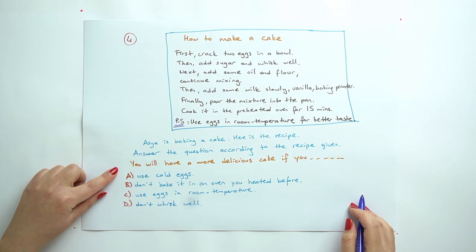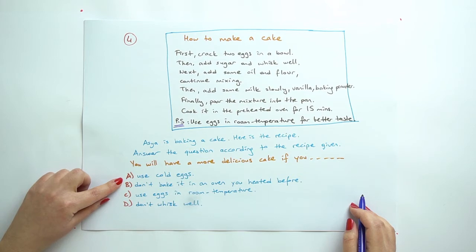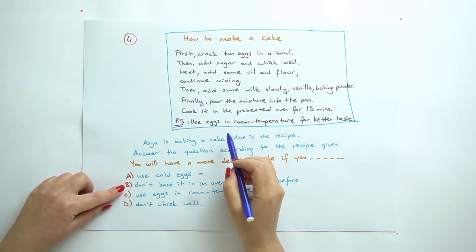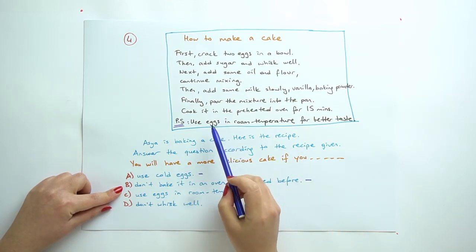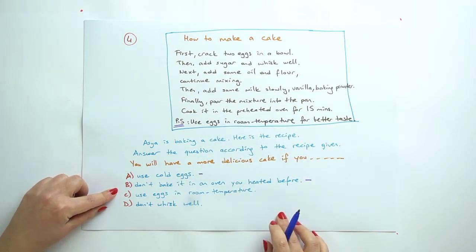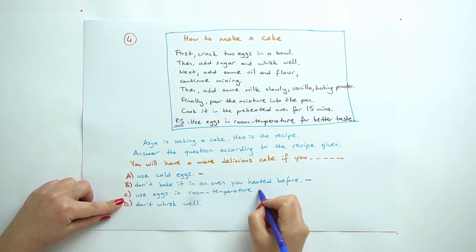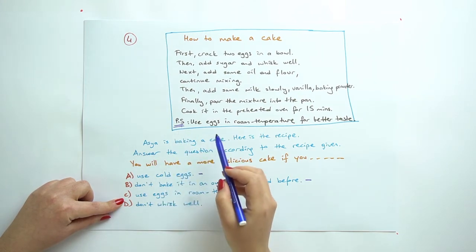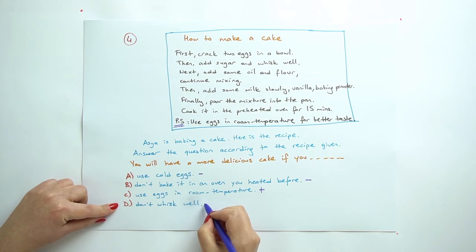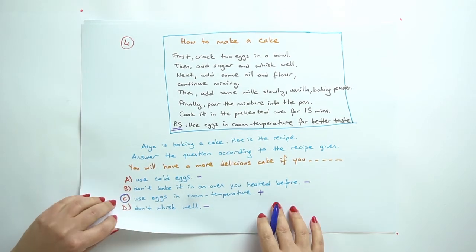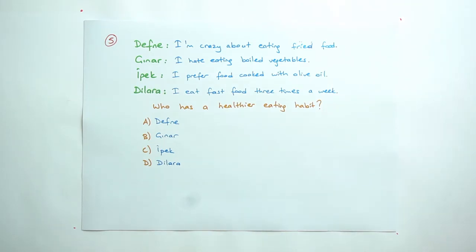And we have a PS: this is important. Use eggs in room temperature for better taste. You will have a more delicious cake if you: A, use cold eggs? No, we cannot say this one because it must be room temperature. B, don't bake it in an oven you heat before? No, because here it says cook it in the preheated oven. C, use eggs in room temperature? Yes, we can say this one because we have the PS here. And D, don't whisk well? We cannot say this one. The answer is C here.